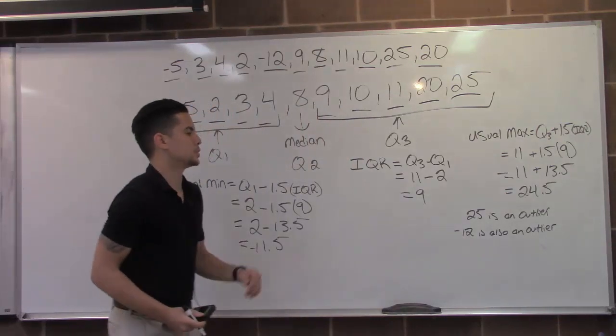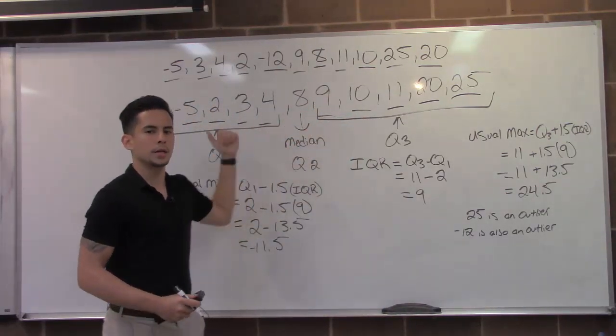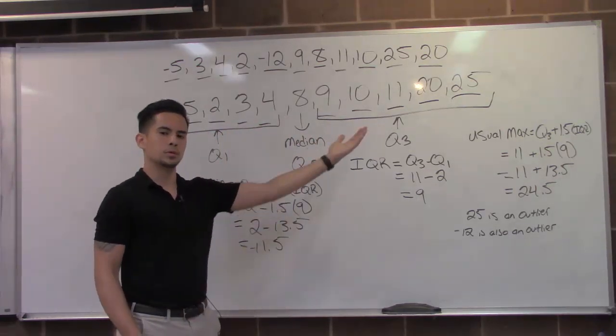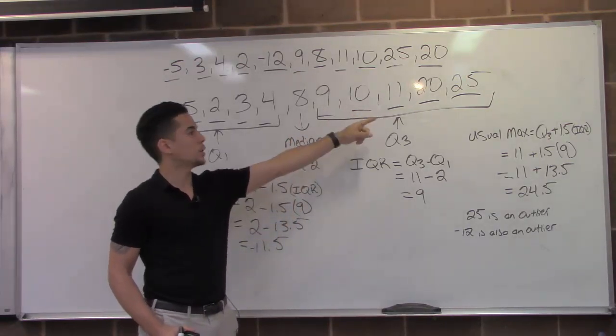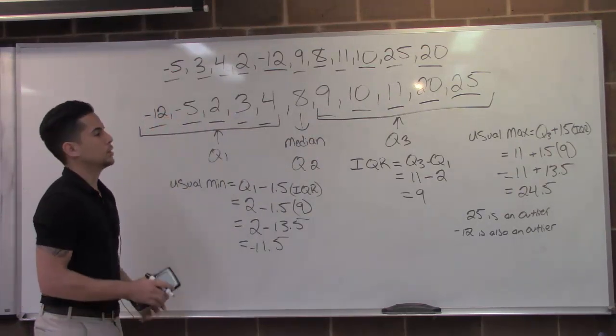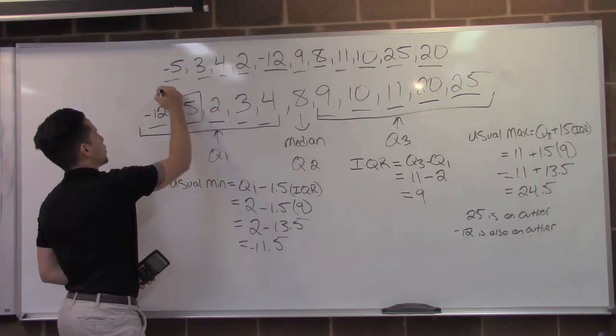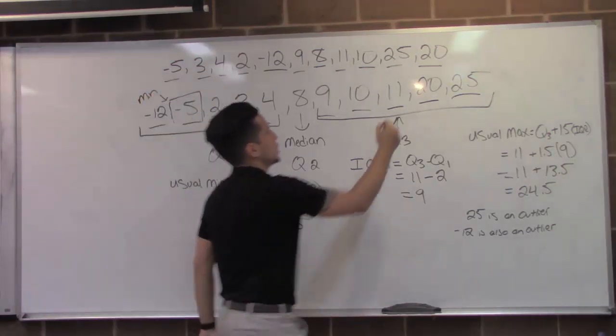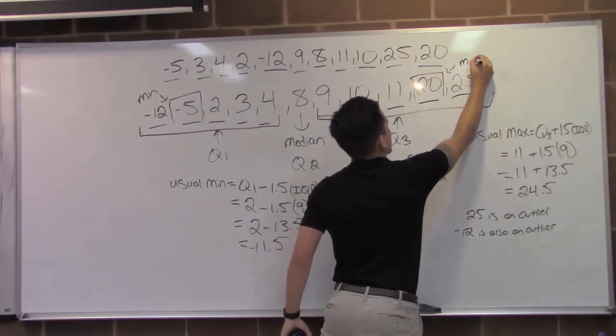So from determining this, we can't say that 25 and negative 12 is our minimum and maximum. So we've got to move over to the next number, next greatest number, which is 20, and next smallest number, which is negative 5. Those two numbers would be considered our min, our true min, and our maximum.